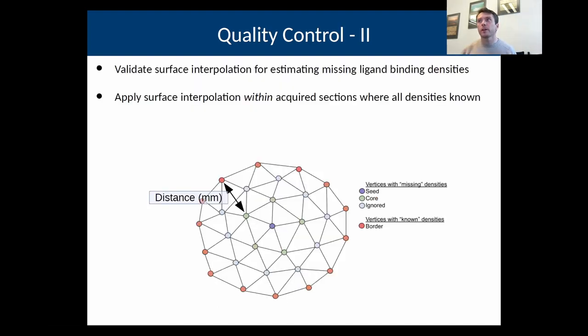The second way of doing quality control on these reconstructed volumes is evaluating how accurate our interpolation algorithm is for estimating missing receptor densities. The way we do this is applying the surface interpolation algorithm within acquired sections. Within these acquired sections, all the vertices we have, we know the receptor density. So what we can do is knock out some of those vertices and see how well we can backfill them in with the surface interpolation.